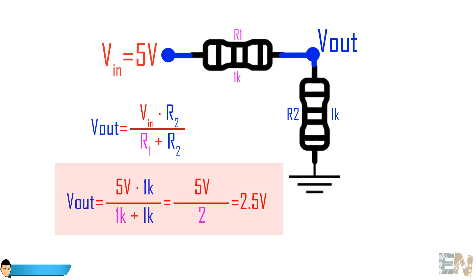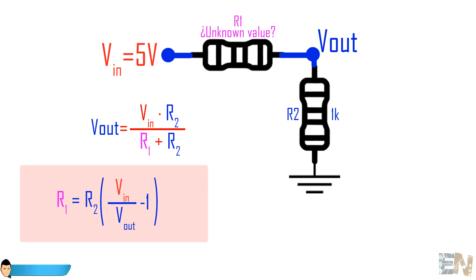But in our case, we don't want to know the output voltage because we could measure that using one of the Arduino's ADCs. What we want to know is the resistance of one of the resistors. So using the same equation, we could obtain the value of R1 depending on R2 as shown here.